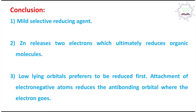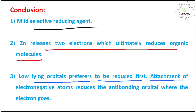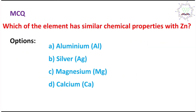In conclusion, zinc/acetic acid is a mild and selective reducing agent. Zinc releases two electrons which reduce the organic molecule. The key principle is that low-lying (lower energy) antibonding orbitals are reduced preferentially, and attachment of electronegative atoms reduces the antibonding orbital energy level — directing where the electrons go.